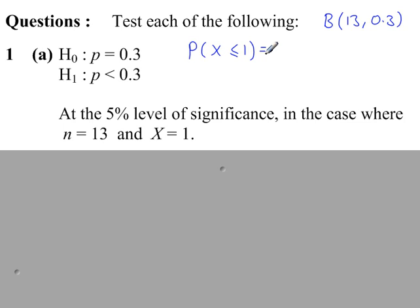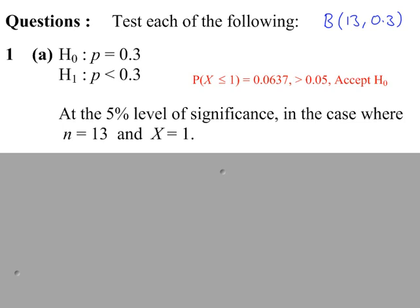From the tables, P(x ≤ 1) is 0.0637. The significance level is 5%, so we compare that to 0.05. The probability we've looked up is more than 0.05, so we accept H0.